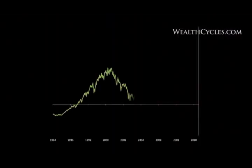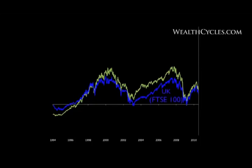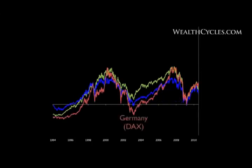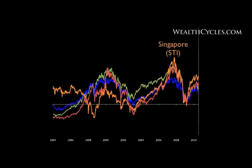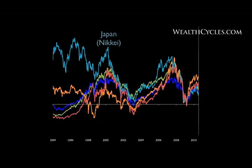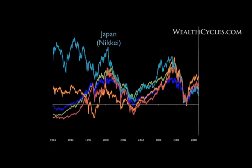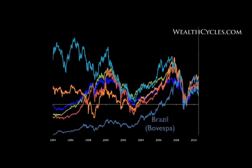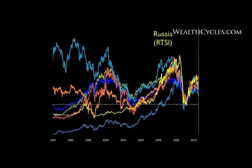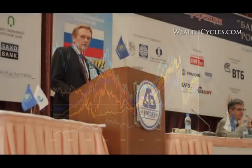The S&P 500 in the United States, the British stock market, the German stock market — they all track each other. The Nikkei in Japan used to trade differently, sometimes in opposite directions to the U.S. market. But around the year 2000, they all started trading the same. Brazil started trading with the U.S. in the same direction in 2008, and so did Russia. Wherever the U.S. goes, you go, and so does the rest of the world.